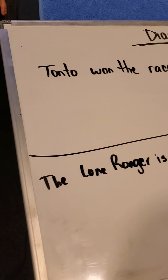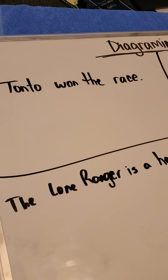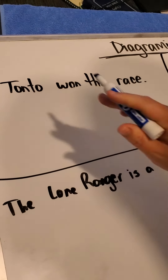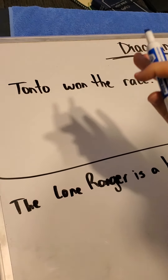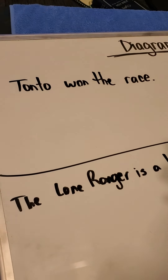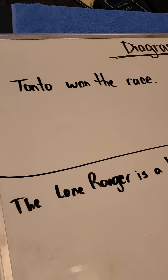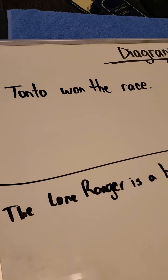Tonto won the race. I'm going to start with the subject and verb like I always do. Tonto won the race. Am, is, are, was, were, be, being, been.